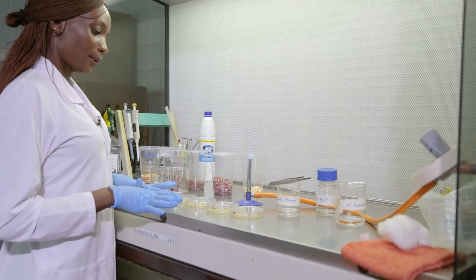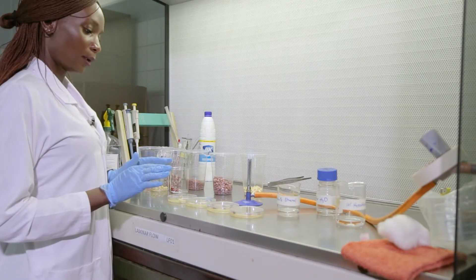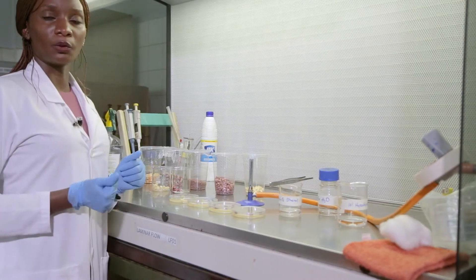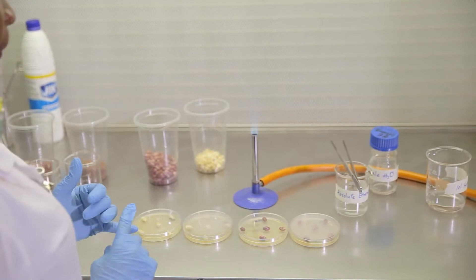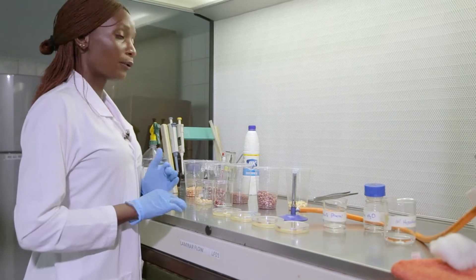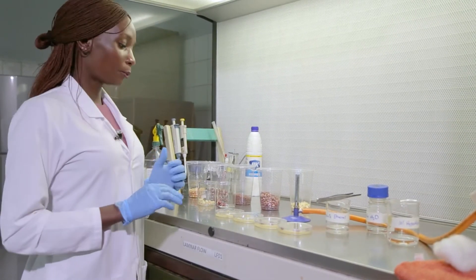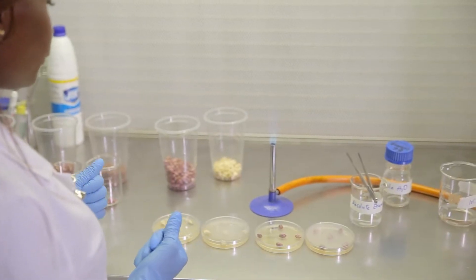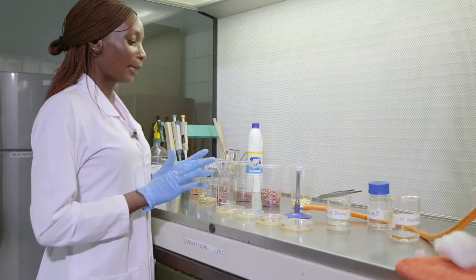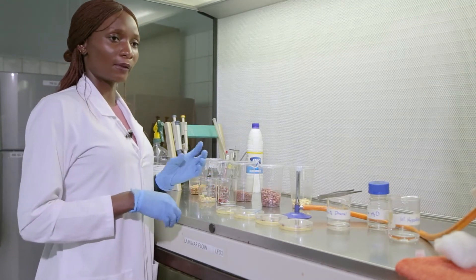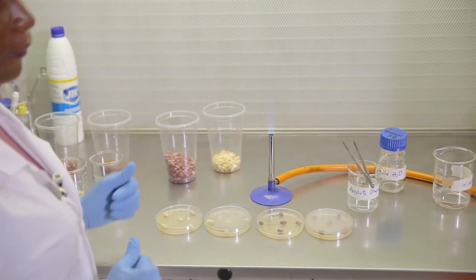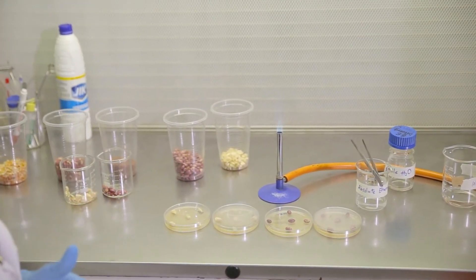So having put our seeds on the agar in duplicate—remember, we do this in duplicate—we are carefully going to carry the plates to the incubator. Incubation can be done at 30 degrees for 72 hours, or you can do it at room temperature for five days. What we are investigating is if we have any internal mold infection. Within three to five days, if there are any molds in the internal surfaces of our seeds and grains, they will be seen growing on the surface of the agar. So after this step we are going to the incubator.